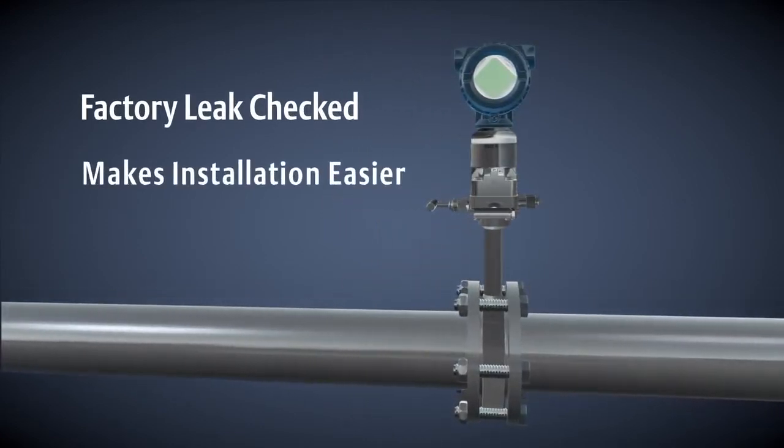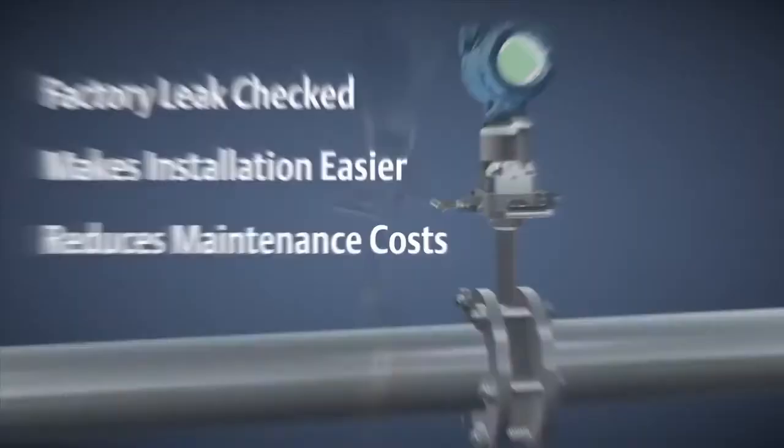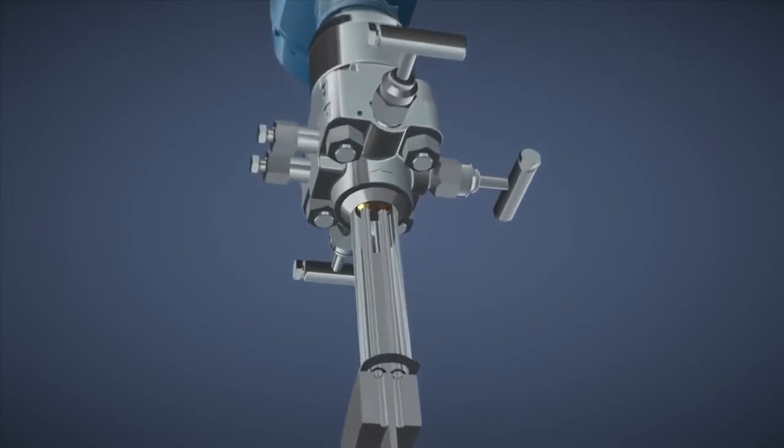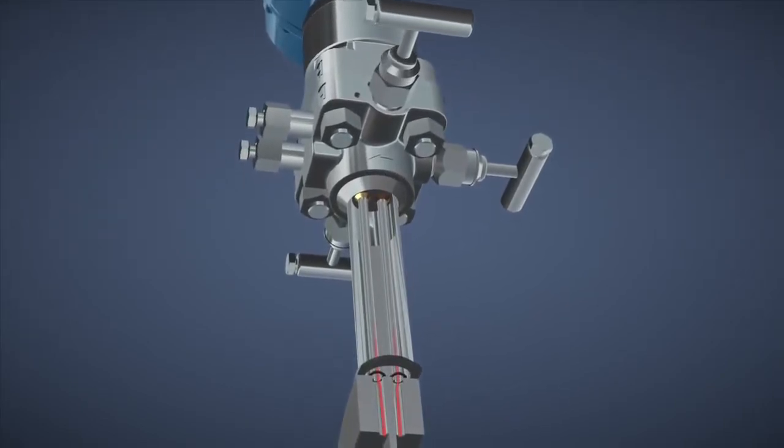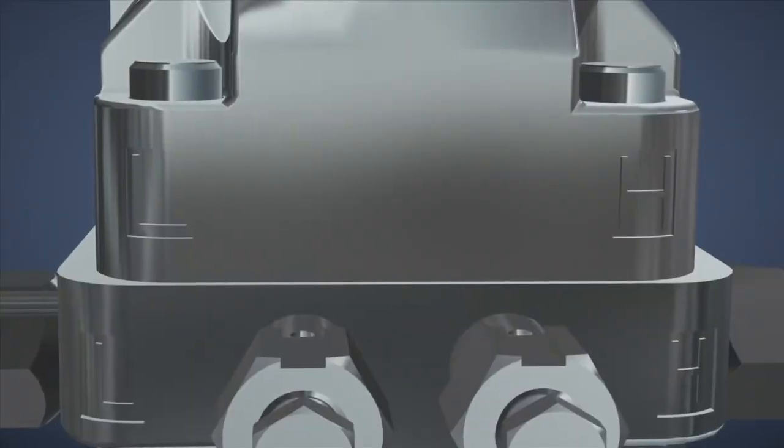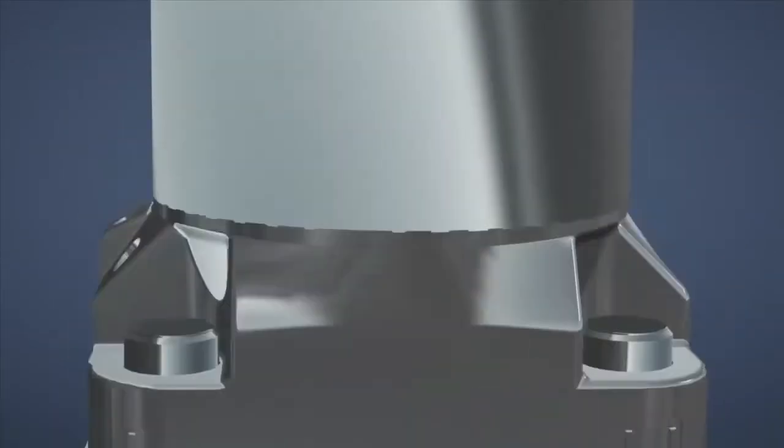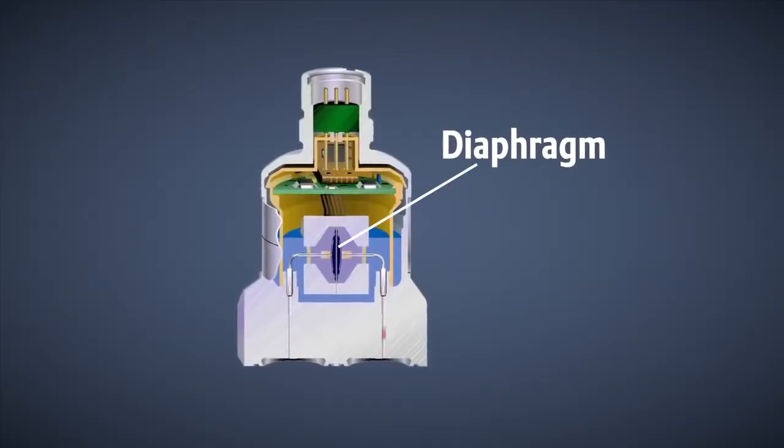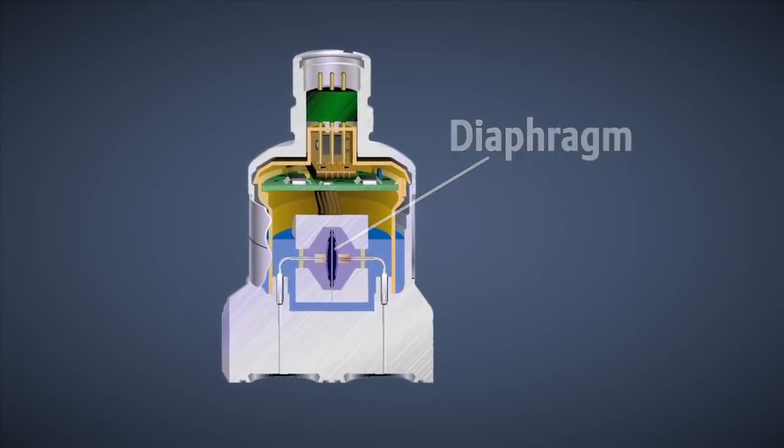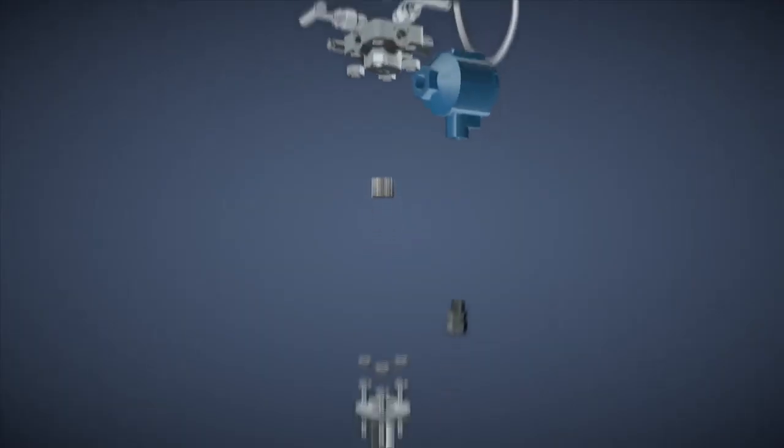The impulse piping of the integrated flow meter runs from the process through the primary element to the sensing diaphragm of the transmitter. On one side of the transmitter is the high pressure side, on the other the low pressure side. The diaphragm deflects relative to the pressure change from one side to the other. It is very sensitive and can detect very small changes in pressure.